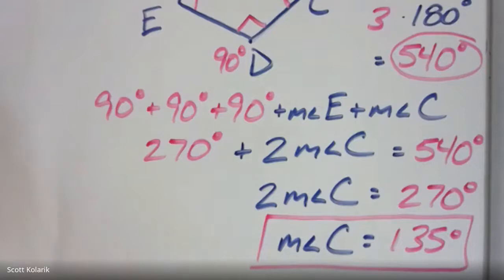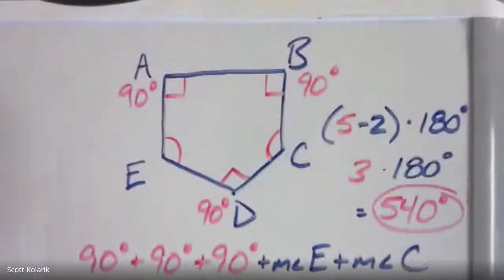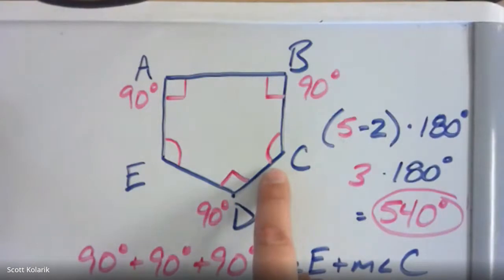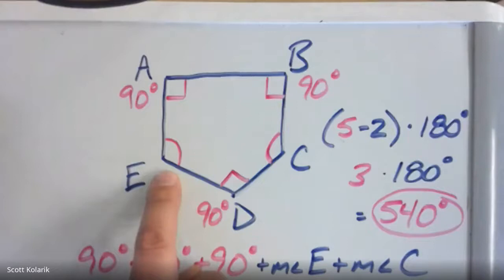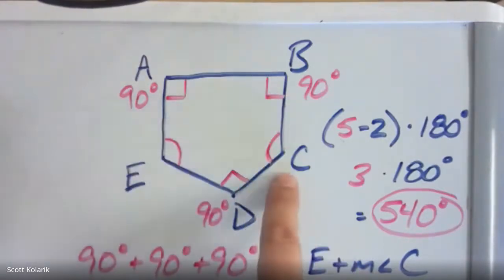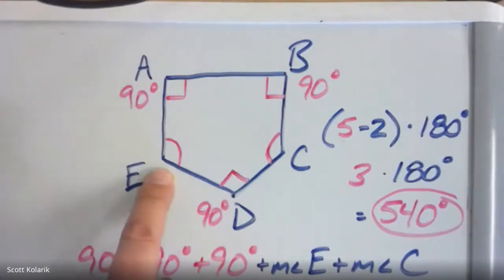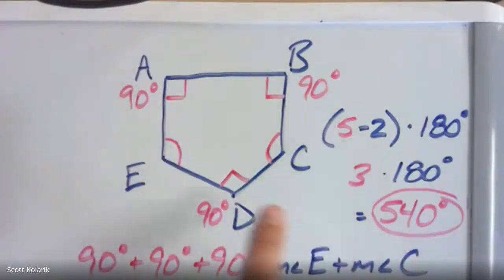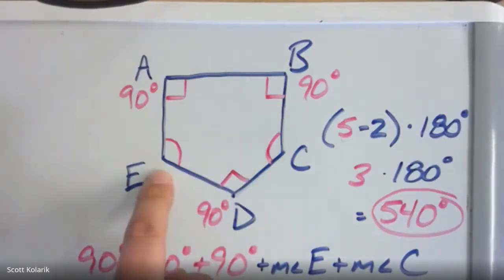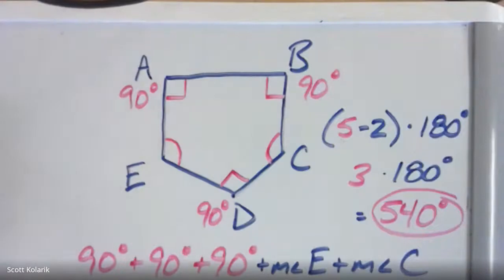We can verify: if angle C = 135° and angle E = 135°, then 90 + 90 + 135 + 90 + 135 = 540°. This confirms the answer. Even with very limited information given, we were able to find the exact angle measurement.